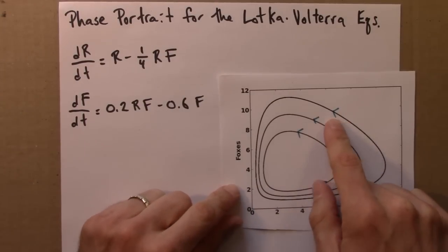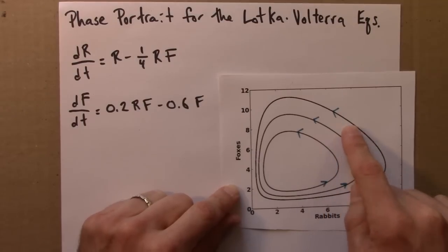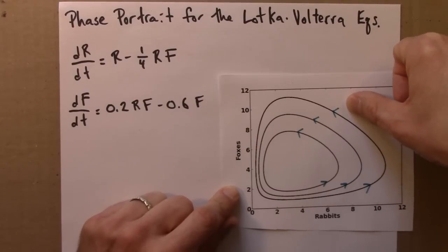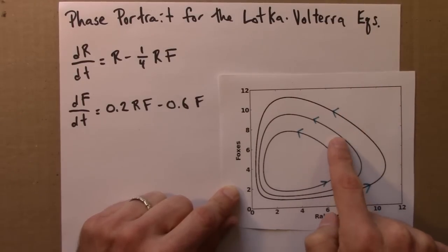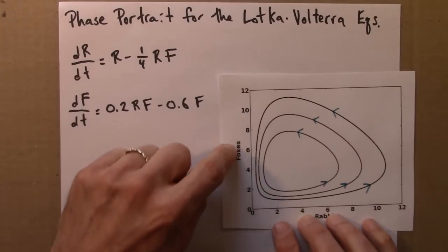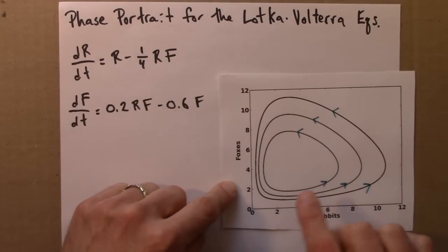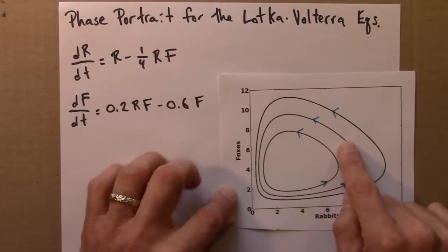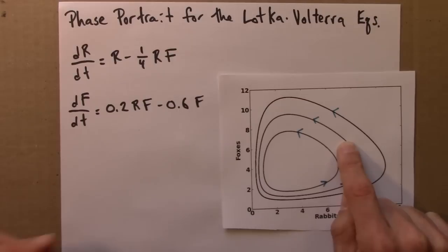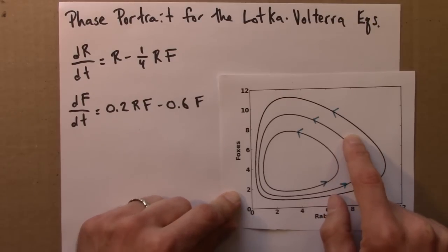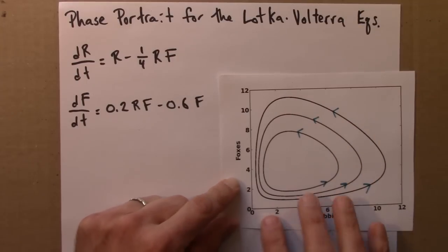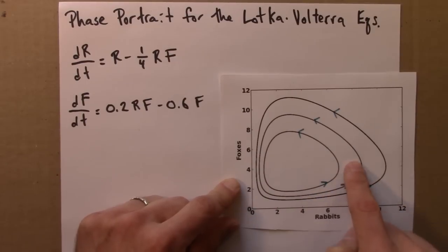And what that means is that if we're in this cycle and I bring a couple more rabbits into the system because I like rabbits, that would move us from here out to here. If a couple foxes got sick, that would move us down this way. The point is, if you're on this cycle, a small change in the number of rabbits or foxes, you'll end up at a different cycle. A cycle that's nearby. You don't get pushed away. The rabbits and foxes don't take over the world. But you also don't get pulled back to this cycle. So depending on the number of rabbits and foxes you have, you'll be in one of these cycles.